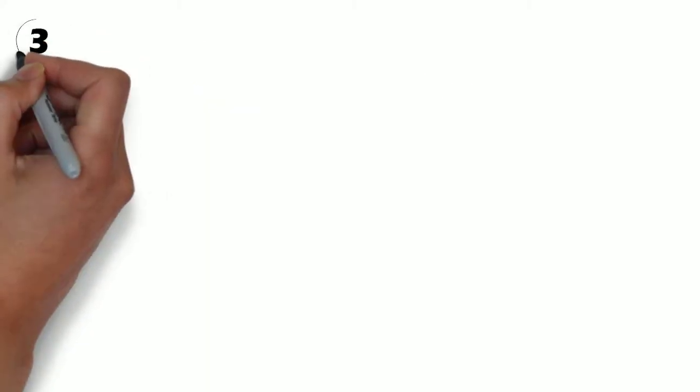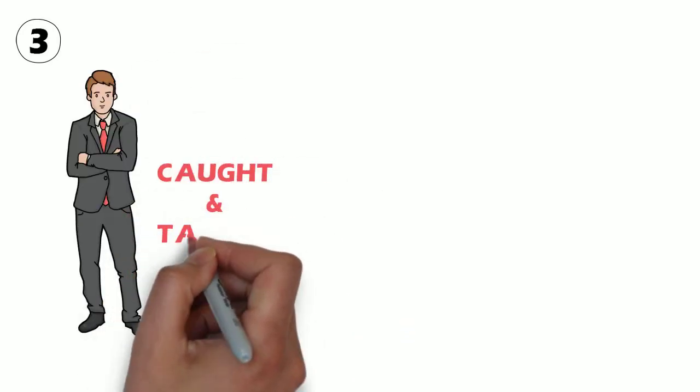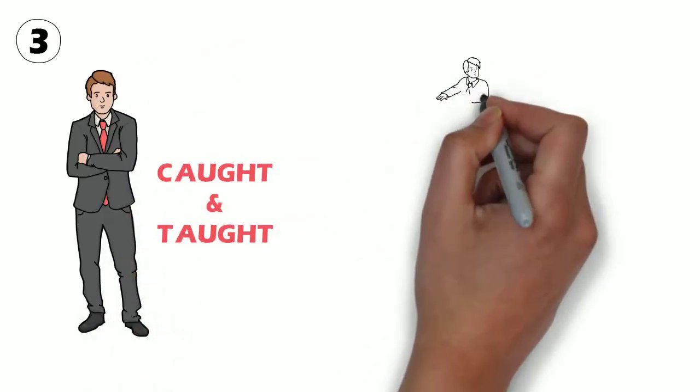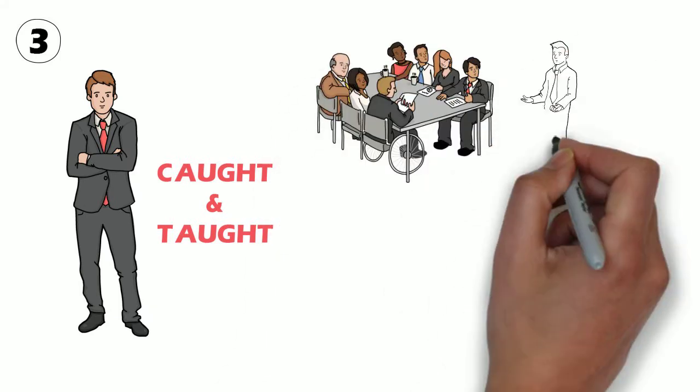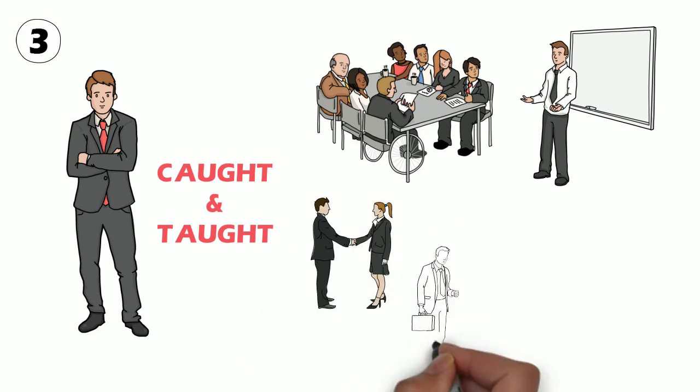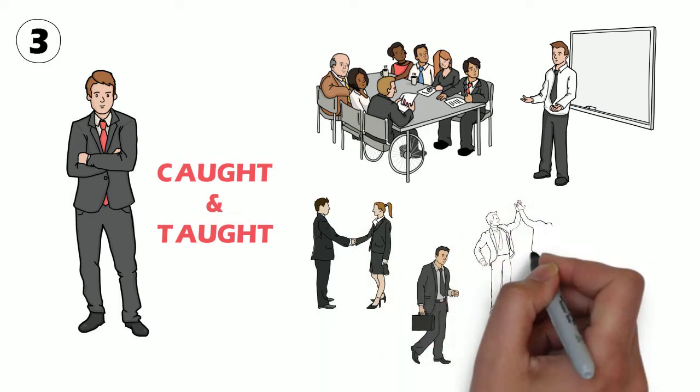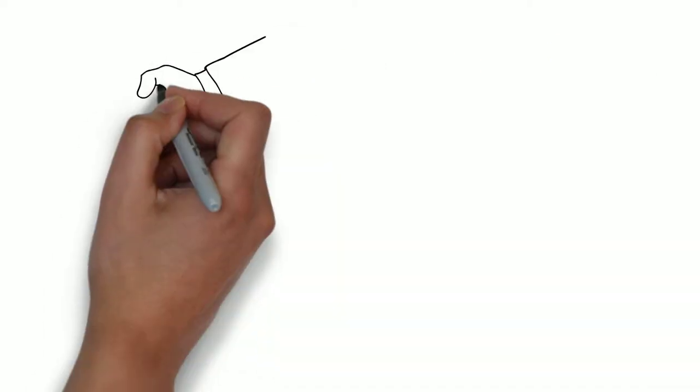The third thing that comes as a result of that is leadership is caught and taught. Somebody is following me somewhere, whether I have the title of a leader or if I lead without a title. How am I showing up in my behaviors, in my habits, in my verbal communication, in my emotional wherewithal?